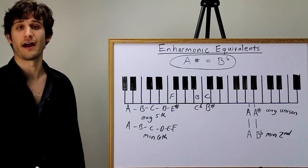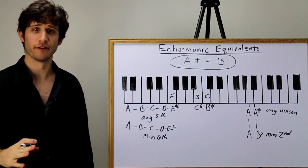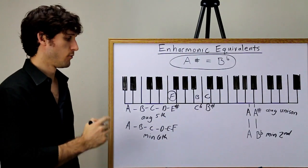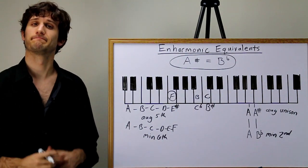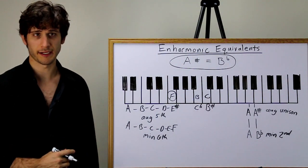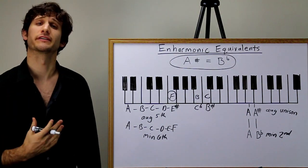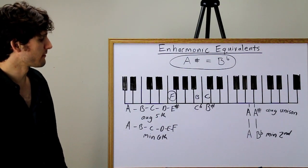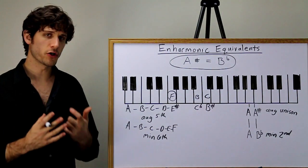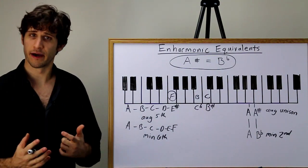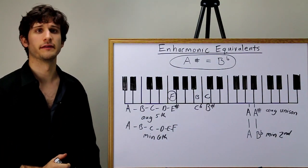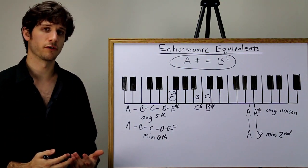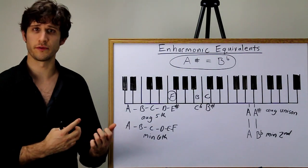This discussion begs a very obvious question. Why on earth would I ever spell the interval A to E-sharp instead of A to F? I mean, I'm playing a freaking F on the piano. It looks like an F. It sounds like an F. Why would I call it E-sharp? Well, it's at this point that I am sad to say we've reached a little bit of a roadblock. At this point in the program, we just haven't learned enough theory to really answer this question thoroughly. In order to talk about this meaningfully, we have to understand what the functional difference is between an augmented fifth and a minor sixth.